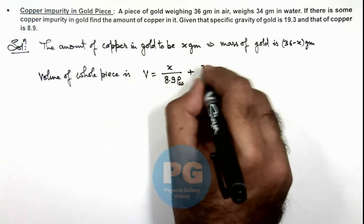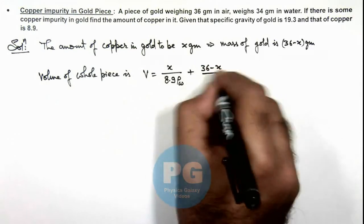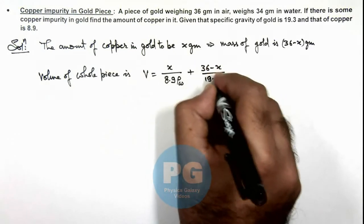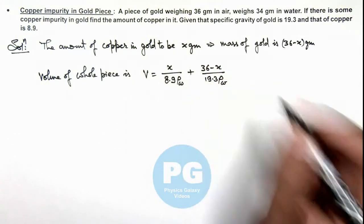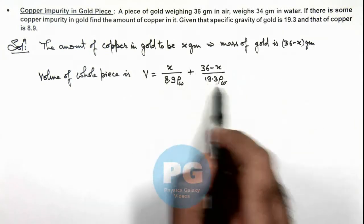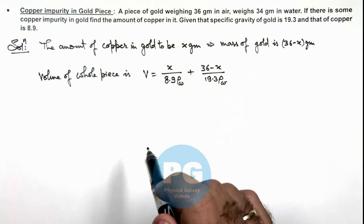Plus 36 minus x divided by 19.3 times the density of water, as these are the specific gravities and ρw is the water density.